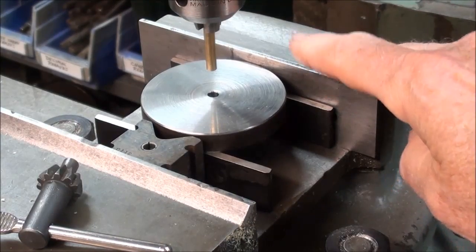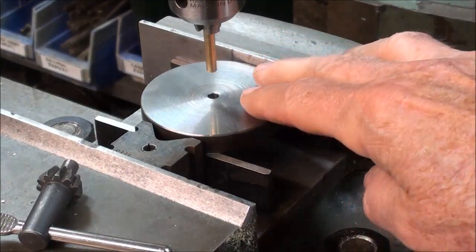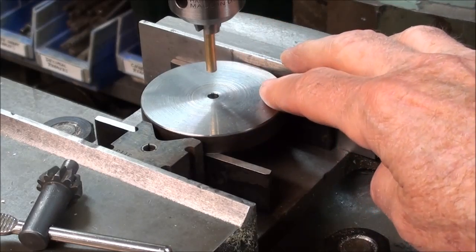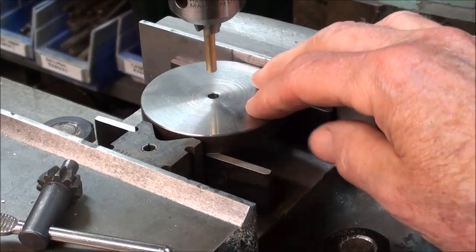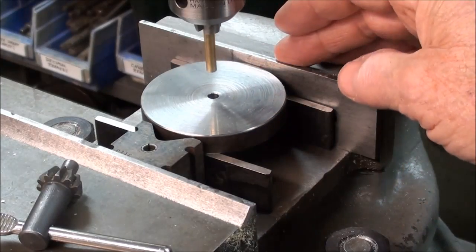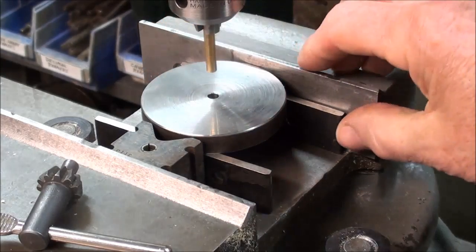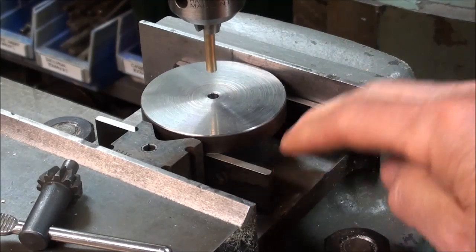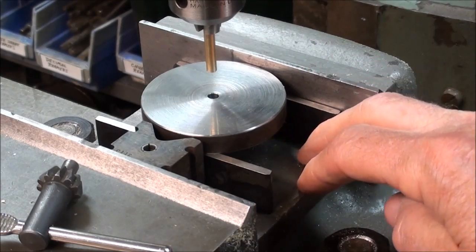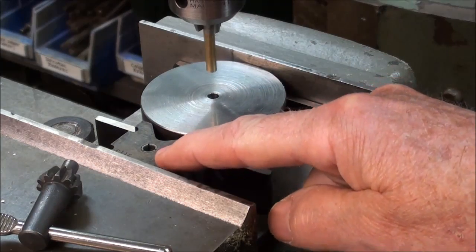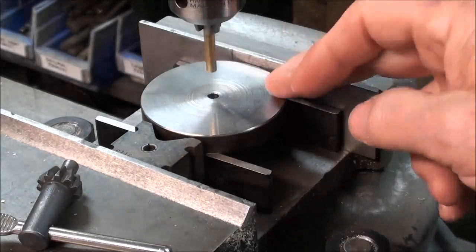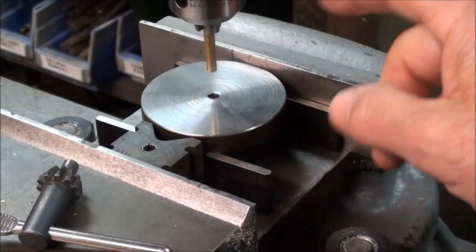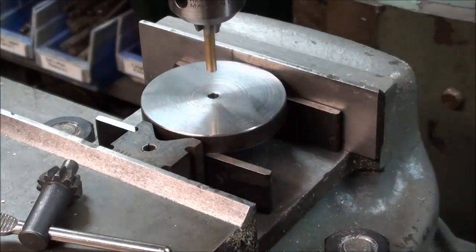There are of course different ways that you can hold the work, and I'm just holding it in the regular Bridgeport vise, but it could be clamped directly to the table, but on smaller work like this, the clamps are usually in the way. So I'm using two thin parallels to hold it up off of the vise so I don't drill into the vise, and I'm pushing against it with the movable jaw here with a v-block, and this should hold it securely. Now you don't want to drill into anything here, so be careful of that.